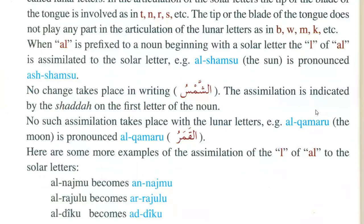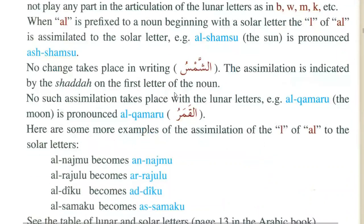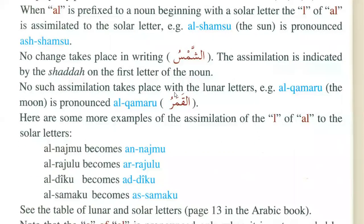So he's telling you that in Solar letters — Huroof Shamsiyya — the Lam will be silent. Now, this change takes place in writing as Ash-Shamsu. The assimilation is indicated by the Shadda on the first letter of the noun. The Lam is written but it is not pronounced. You need to remember this point: Lam is not pronounced. No such assimilation takes place with the Lunar letters.